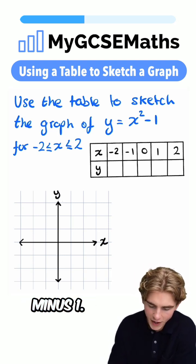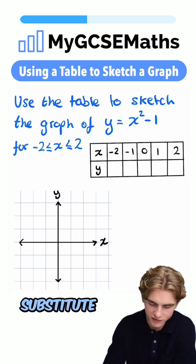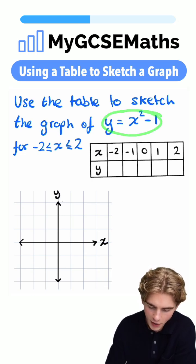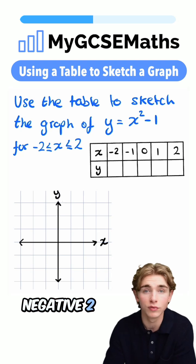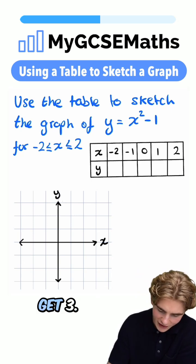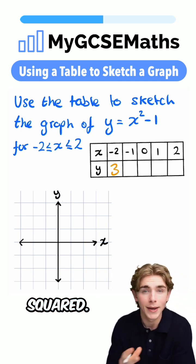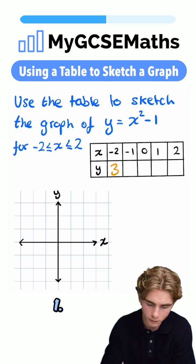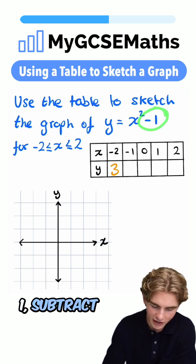y equals x squared minus one. When x is negative two, we substitute that into our equation. y is going to be equal to negative two squared, which is four, because minus two times minus two is positive four. Subtract one, we're going to get three. Next up, minus one squared, minus one times minus one is positive one. Then take one away. One subtract one is going to be zero.